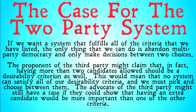But the proponent of the third party might claim that having more than two candidates allowed should itself be a desirability criterion. This would mean, in combination with Arrow's Impossibility, that no system is going to satisfy all desirability criteria, and we must pick and choose between them. The advocate of the third party might still have a case if they could show that having an extra candidate would be more important than one of the desirability criteria. In the next couple of videos, we'll look first at Arrow's Impossibility Theorem to demonstrate that with more than two choices nothing passes all criteria, and then at alternative criteria a third-party proponent might offer.